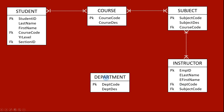We also add a Department entity with attributes department code and department description. The department code is a foreign key in the Instructor entity, so we connect them with a line and add cardinality and modality. An instructor can be found in at least one department or many departments, and a department can have at least one instructor or many instructors.